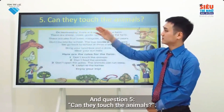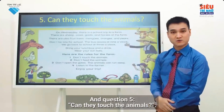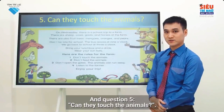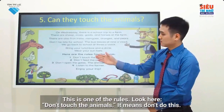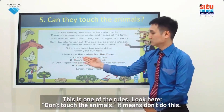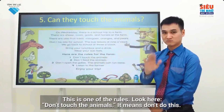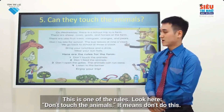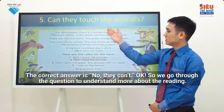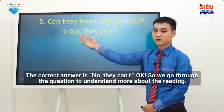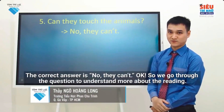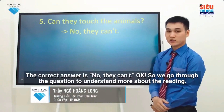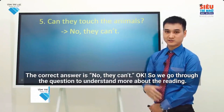And question five: can they touch the animals? This is one of the rules — look here: don't touch the animals. It means don't do this. So the correct answer is no, they can't. We've gone through all the questions to understand more about the reading.